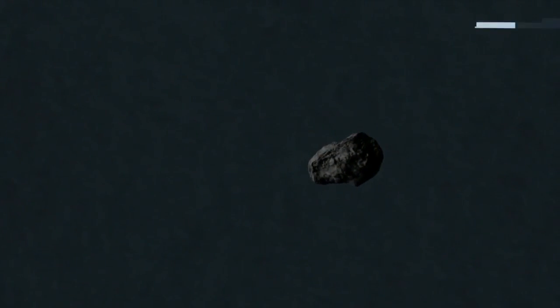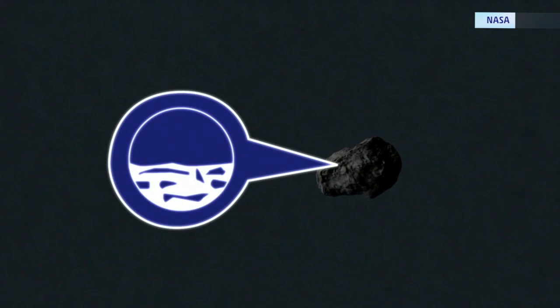With Comet ISON on course to track past the Sun, let's show you how the Sun cooks a comet. For this recipe we'll need one comet as large as you can find.